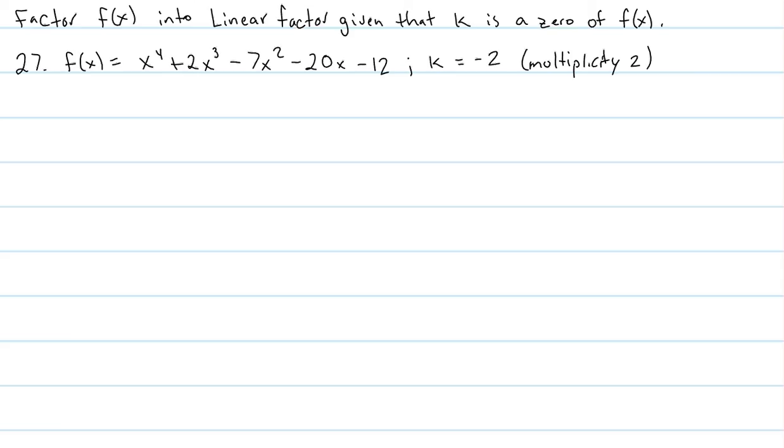we're going to use synthetic division and use our negative 2k, that's our divisor. So, we're going to do negative 2 and use synthetic division. In here, we're just going to take the coefficients: 1, 2, negative 7, negative 20, and negative 12.